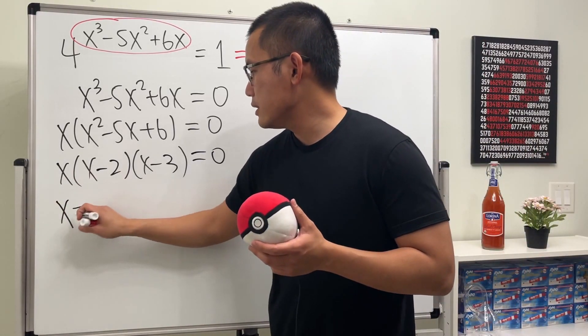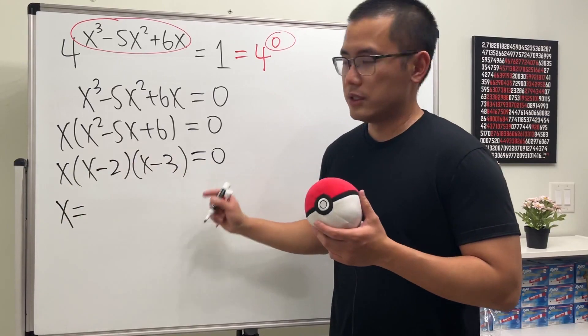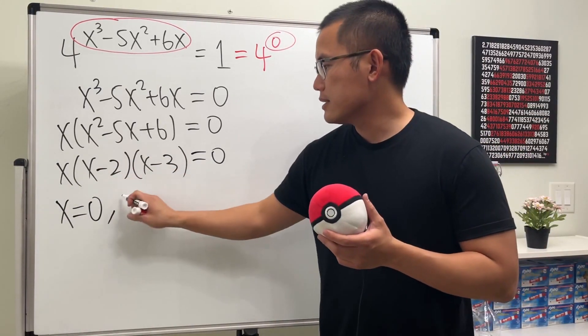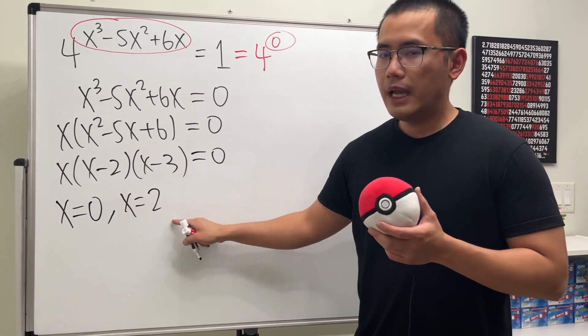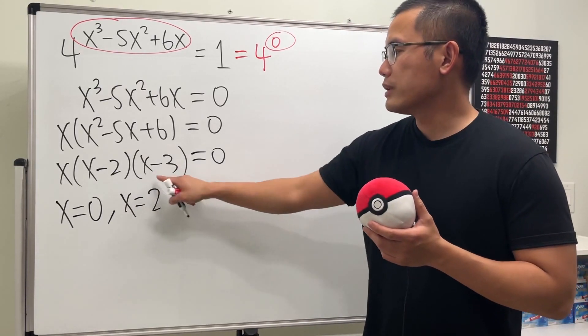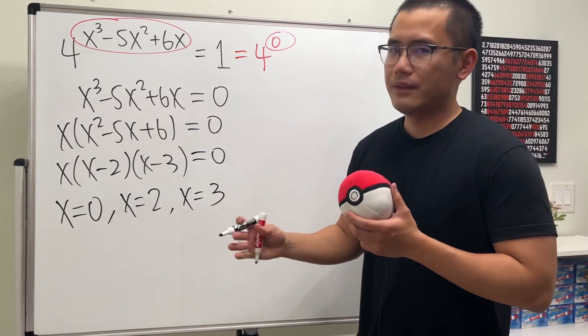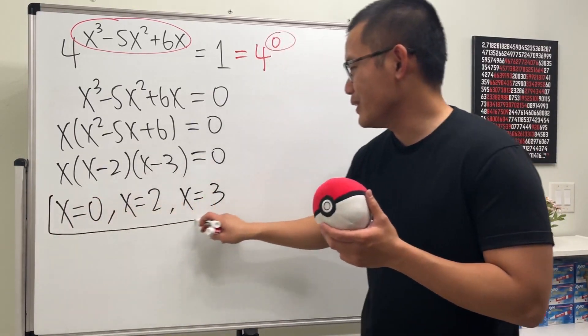So first we are going to put x is equal to zero, the first factor equal to zero. Next we want to put this factor to be zero, that means x is equal to 2. And lastly, put this to be zero, that means x has to be equal to 3. So here we have it, we have three answers, and that will do it.